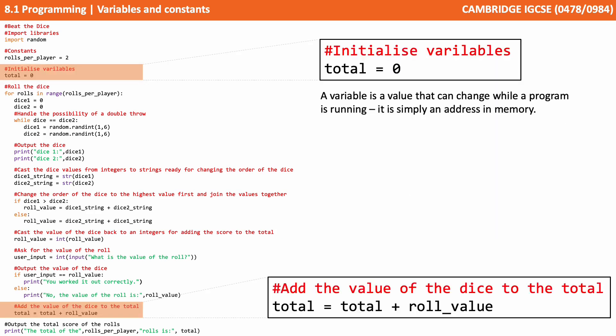We can see at the top of the program we are initializing a variable: total equals 0. This is really good programming practice. Once you've declared variables, it's a good idea to give them an initial value, as when you declare variables the contents are actually null. This is a variable, which means the contents can change while the program is running — it's simply a label, an address, a location in memory. Further down the program, we can see a line of code updating the contents of the total variable: total becomes equal to total plus role value. We can do that with variables because the contents can vary while the program is running.